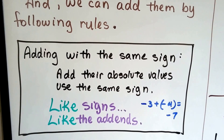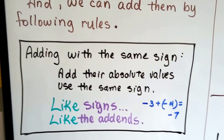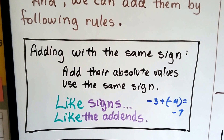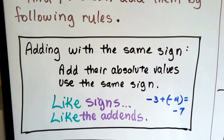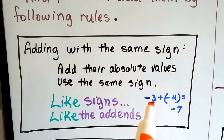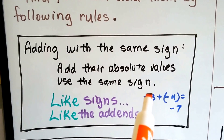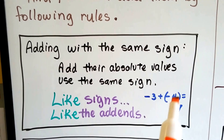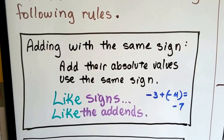Here's the first rule. When we're adding rational numbers that have the same sign, we just add their absolute values and use the same sign. My little saying is: like signs, like the addends. So if we're adding negative 3 plus negative 4, we add the absolute values — that's 3 plus 4 — and take the same sign. They're both negative, so our answer is going to be negative.